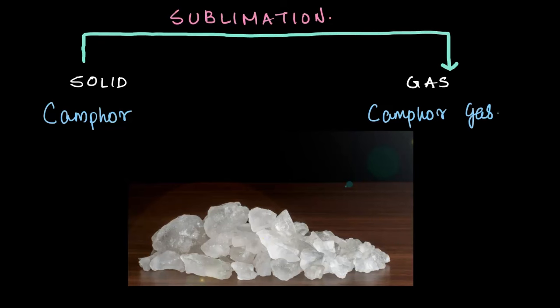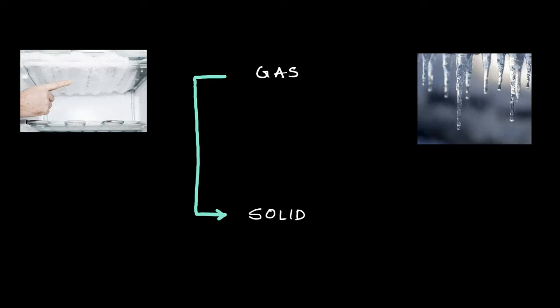Camphor also gets converted directly into gas at room temperature, though it's a comparatively slower process than dry ice. Next up, let's take a look at how gas can convert into a solid, skipping the liquid state entirely. Here are a couple of examples to understand this.